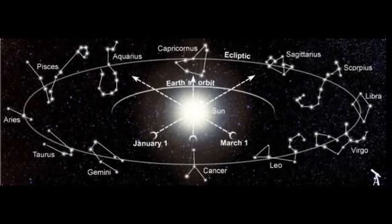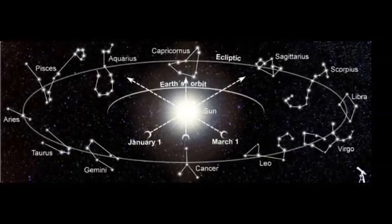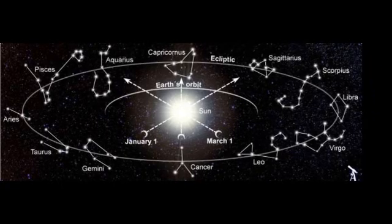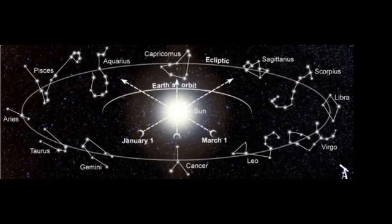It takes the Earth one year to orbit the sun, and we always go in the same direction and on the same plane, which means that the sun is always in front of one out of the 12 zodiacal constellations, man-made patterns in the distant stars.